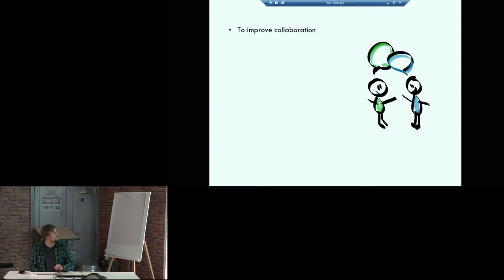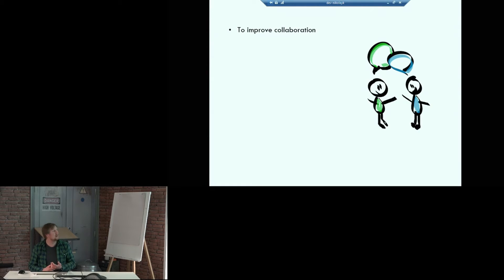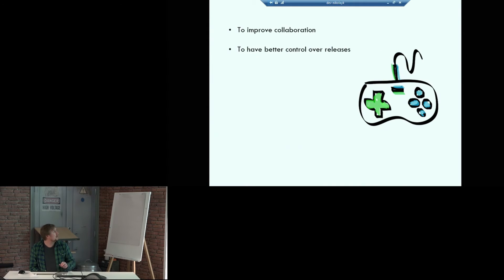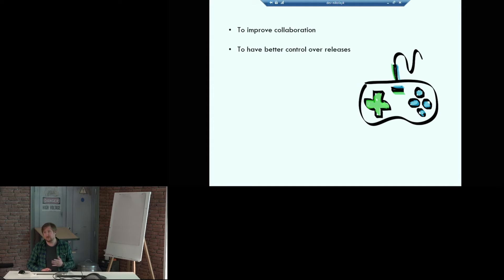So why would you use Feature Toggles? First of all, to improve collaboration — things like continuous integration, truly independent releases, no complex merges. This is something Feature Toggles can help with. The picture is supposed to represent two people happily chatting about something, rather than resolving 200 conflicts in XML files after merging. Also, to have better control over releases — stuff like incremental rollout, early access programs, synchronization of releases with marketing campaigns, or even the ability to switch a feature off if it's problematic.